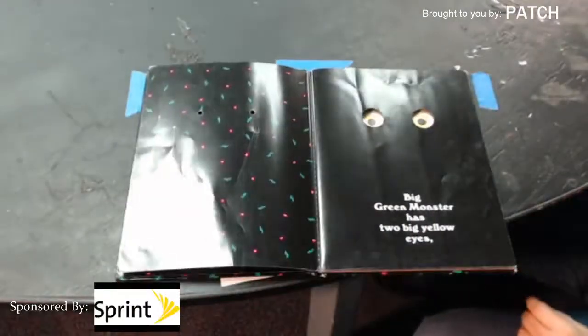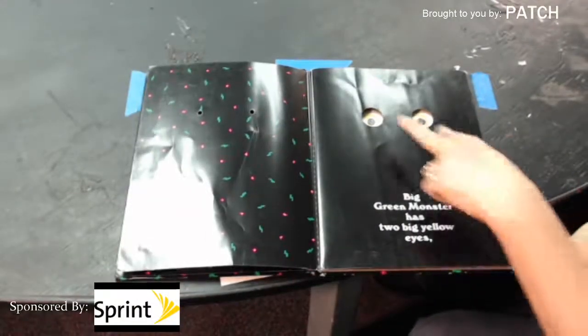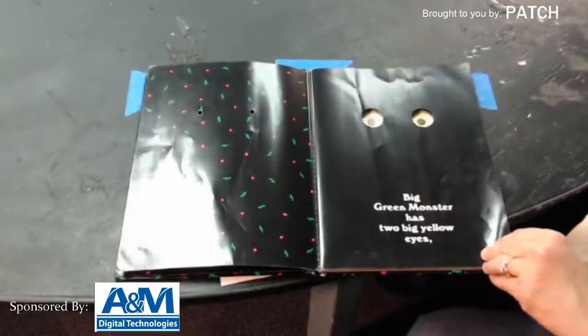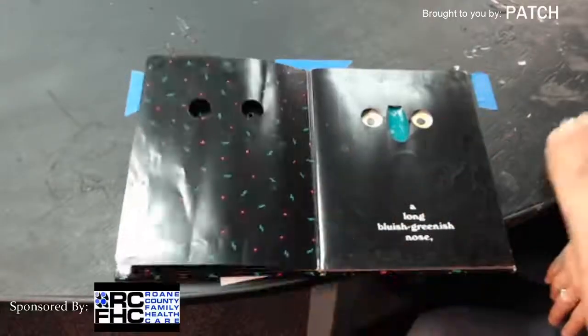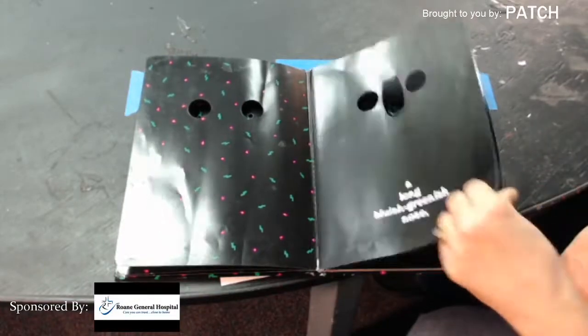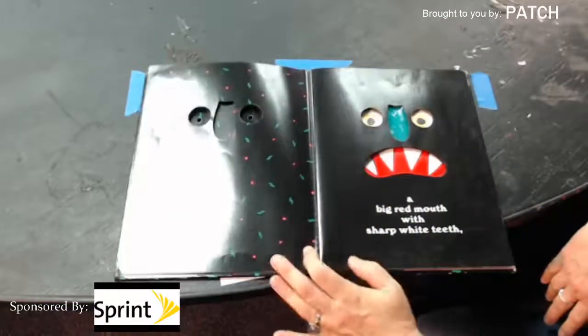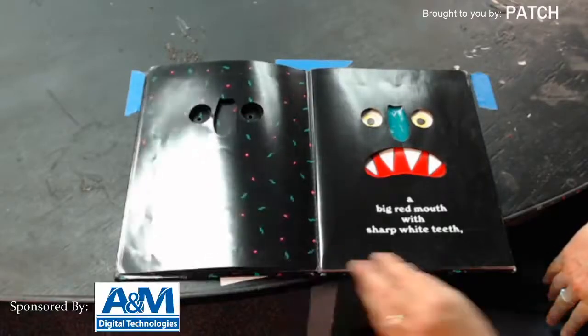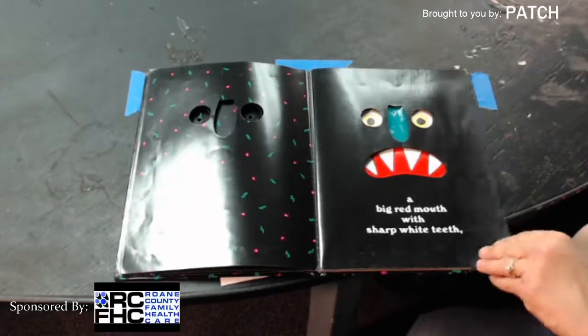Big green monster has two big yellow eyes. A long bluish greenish nose. A big red mouth with sharp white teeth. Look at that.